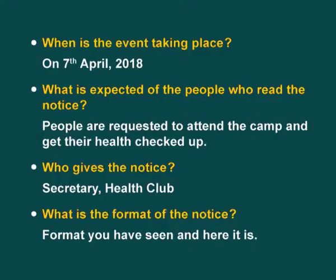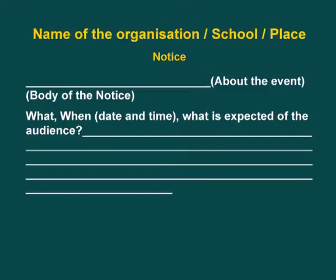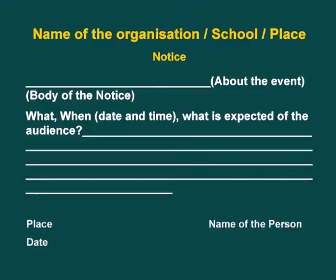Now let's look at the format of the notice again. The first line says name of the organization, oblique school, oblique place. And then you write the word 'Notice.' Then you write the main event. Now we come to the body of the notice. We have already discussed about the three W's — what, when (which will include date and time), and what is expected of the audience. After completing the body, on the left hand side, write place and date of giving the notice. On the right hand side, write the name of the person giving the notice, and in the second line, the designation — for example, secretary or president.